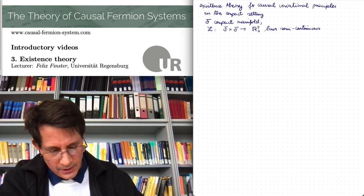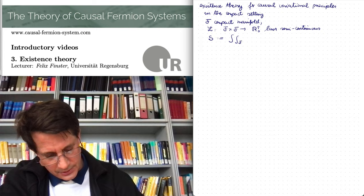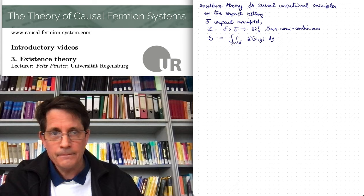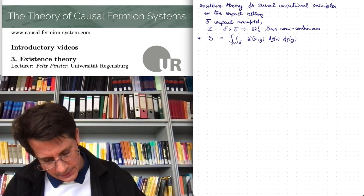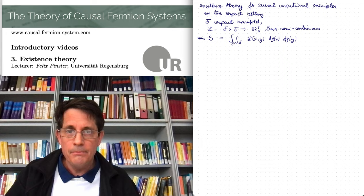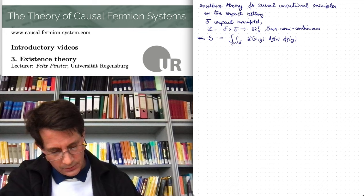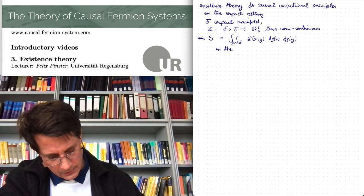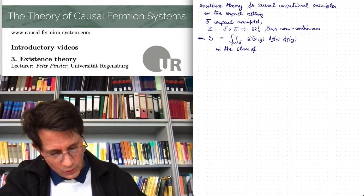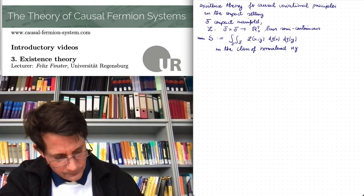And then we consider the action defined as this double integral. So we minimize this in the class of regular bounded Borel measures of total volume 1, so this means in the class of normalized regular Borel measures.